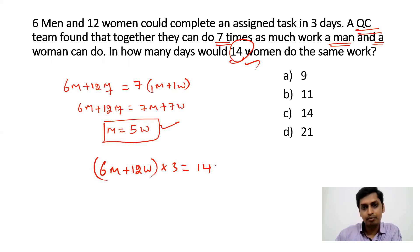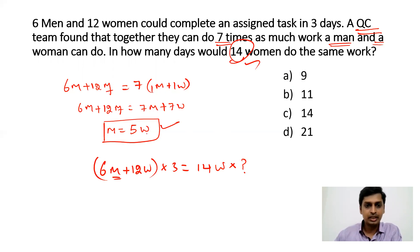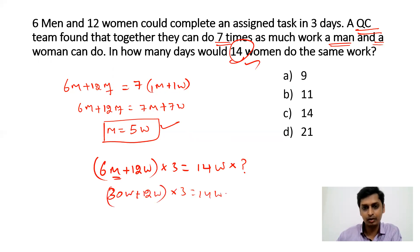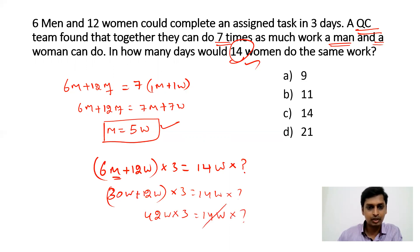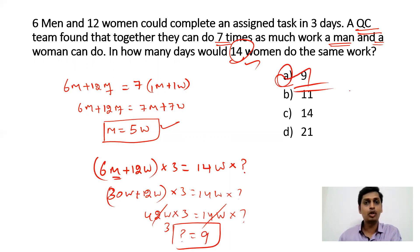We need to find in how many days 14 women will complete the same work. Converting men to women: 6 men = 30 women, so 30 + 12 = 42 women working for 3 days equals 14 women working for an unknown number of days. So 42 × 3 = 14 × ?, giving ? = 3 × 3 = 9. So 14 women will complete the same job in 9 days.